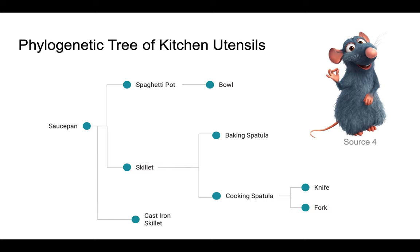Here I have represented where cladogenesis, or the splitting of a lineage in two, occurs. We see that it occurs from the saucepan to the pot and skillet, from the skillet to the baking and cooking spatulas, and from the cooking spatula to the fork and knife. Thus, we see that it occurs three times.